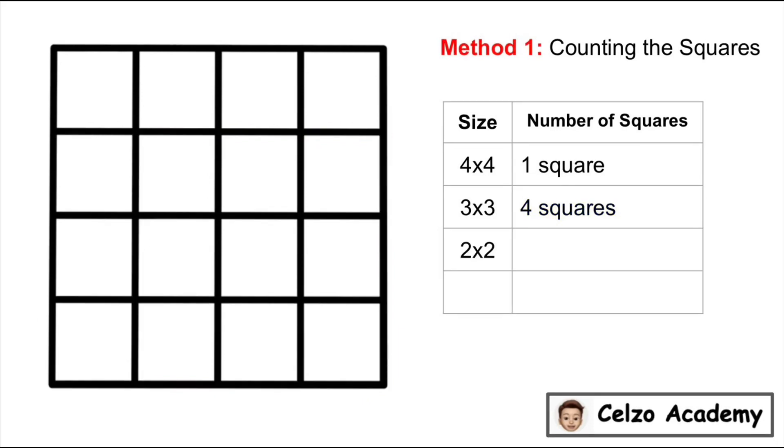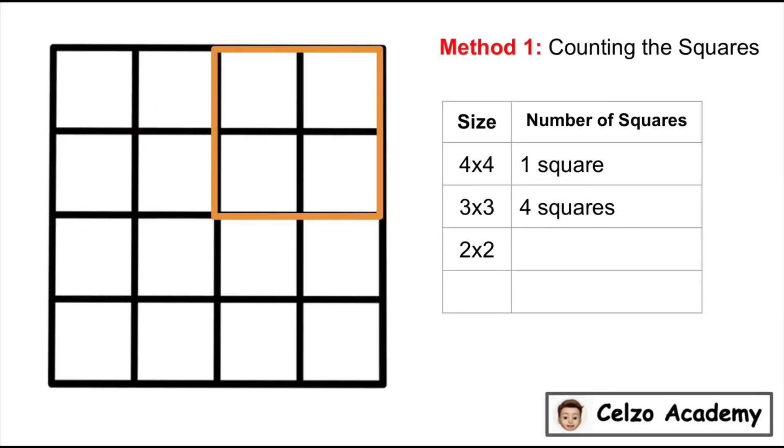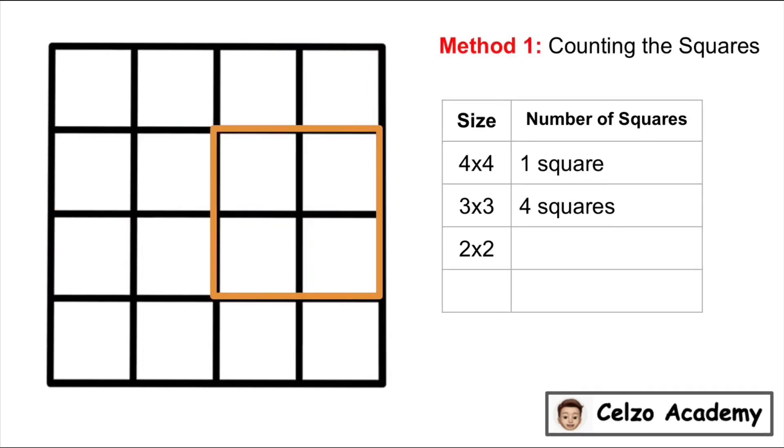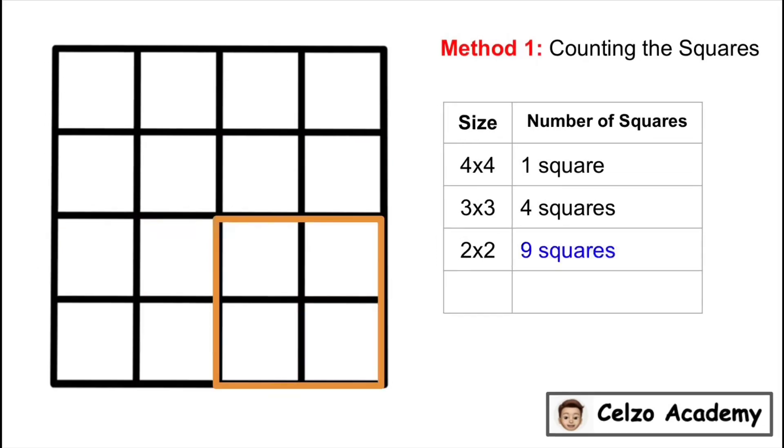Now let's have 2x2 squares. How many 2x2 squares do you think can we have? 1, 2, 3, 4, 5, 6, 7, 8, 9. So there's 9 squares that are 2x2 in size.